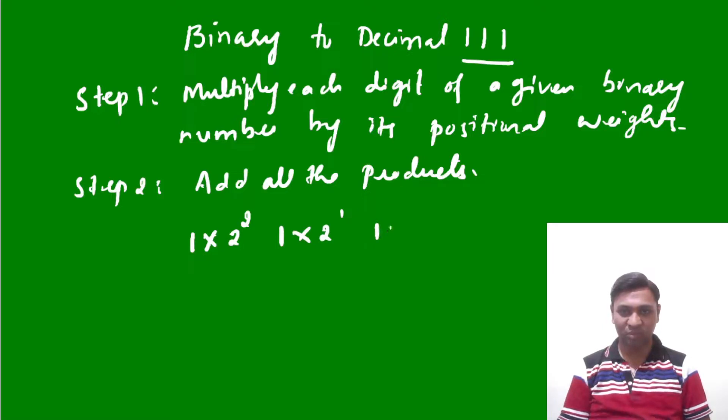The next bit here is one, so once again I'm going to write 1 × 2⁰. Next, the second step says to add all the products.